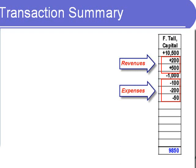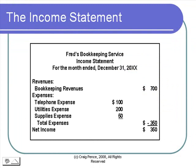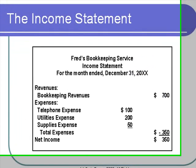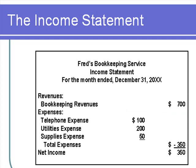Our second statement is called an income statement, and it simply summarizes revenues and then subtracts expenses to determine the amount of profit earned in the business. The total revenues earned amount to $700. There were three expenses, and they add up to a total of $350. So when we subtract, the profit — which we call net income — from business operations is $350. If the expenses had been greater than the revenues, this would be a negative figure that we would call a net loss.